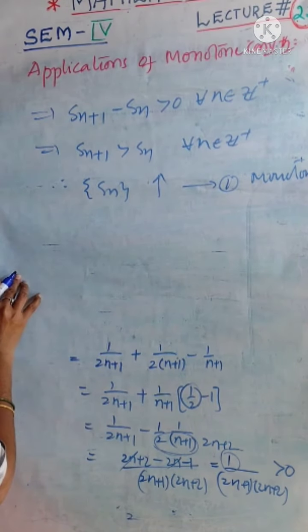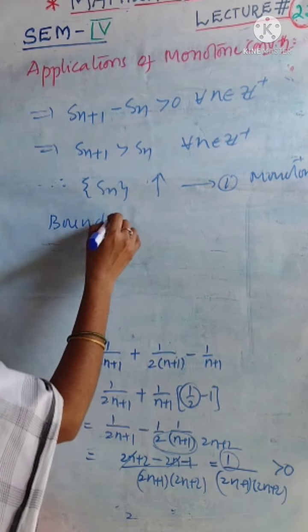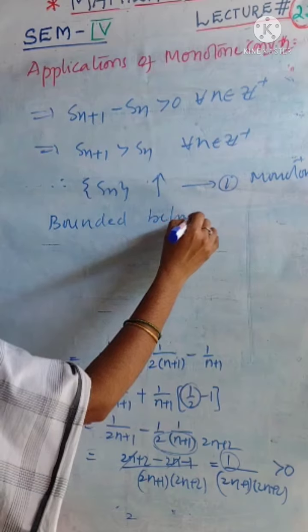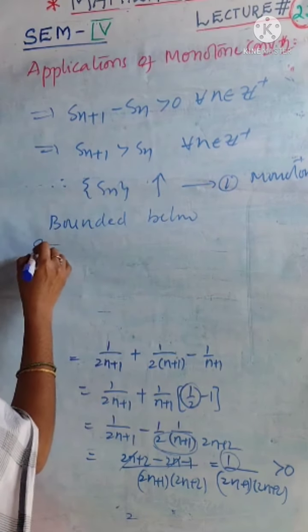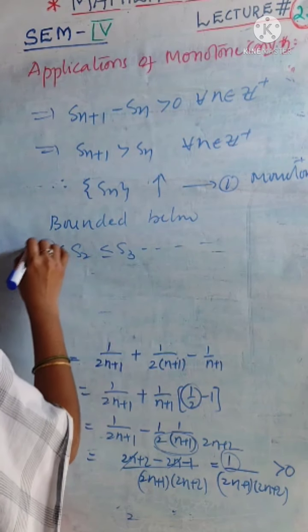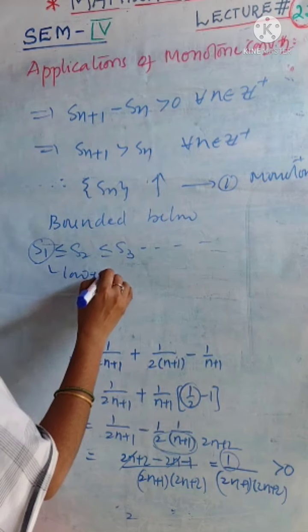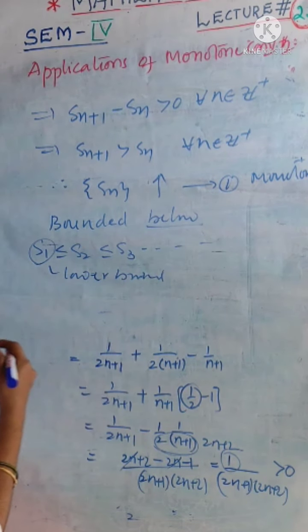Also, we know that an increasing sequence is always bounded below. Because what is the definition of increasing? S1 is less than or equal to S2 is less than or equal to Sn and so on. S1 is the lower bound. Hence, it is bounded below.